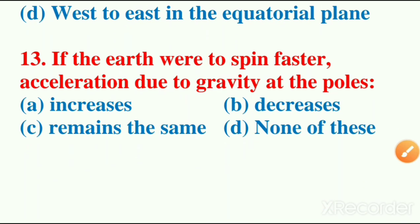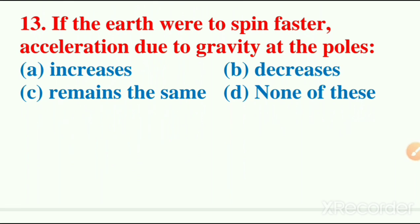13th question: if the Earth were to spin faster, acceleration due to gravity at the poles? Options are increases, decreases, remains the same, none of this. So the acceleration due to gravity at the pole will remain the same, option C. If Earth will spin faster at the poles, the acceleration due to gravity will remain the same.